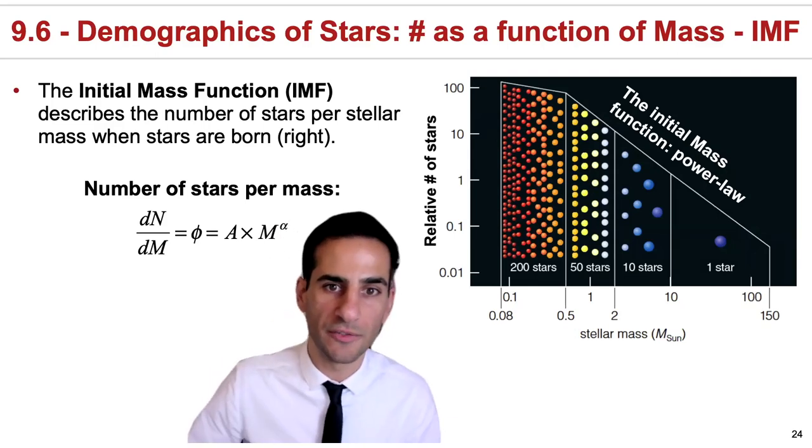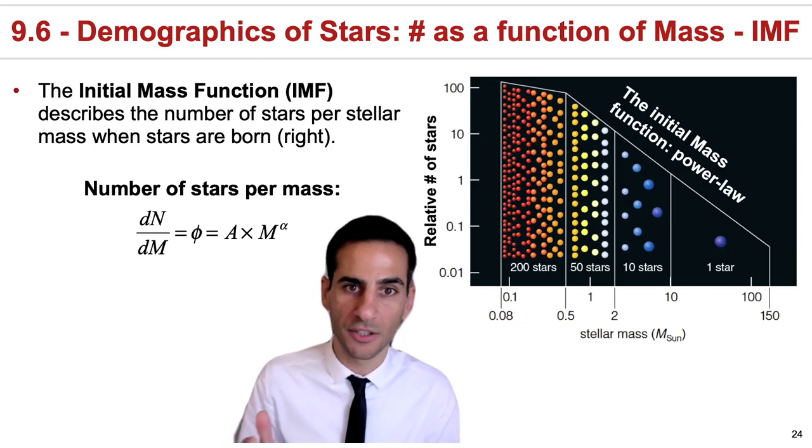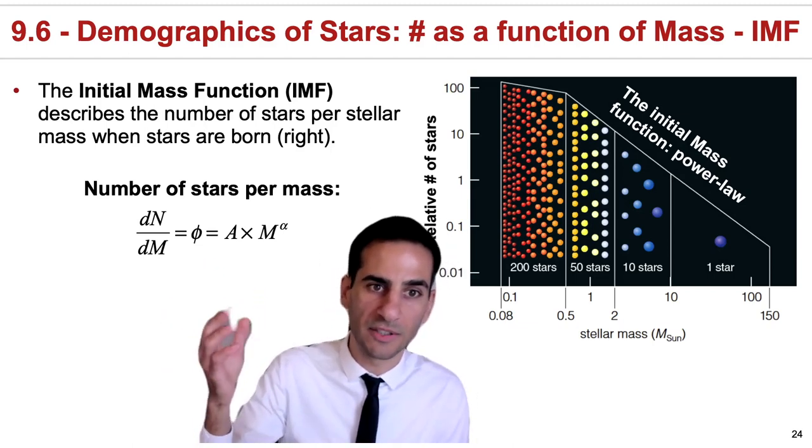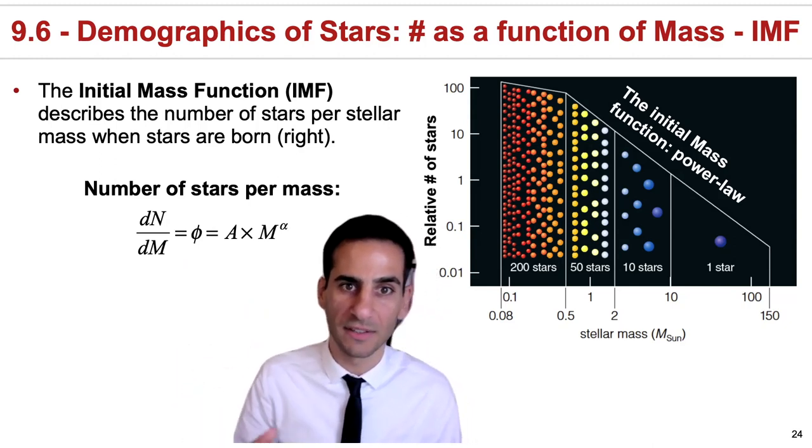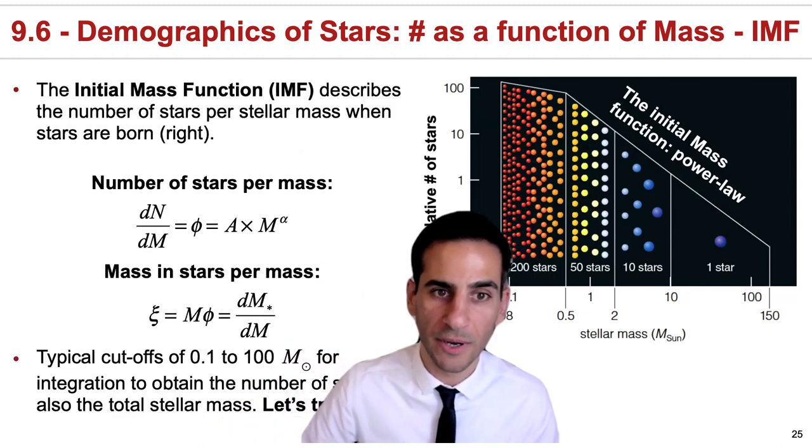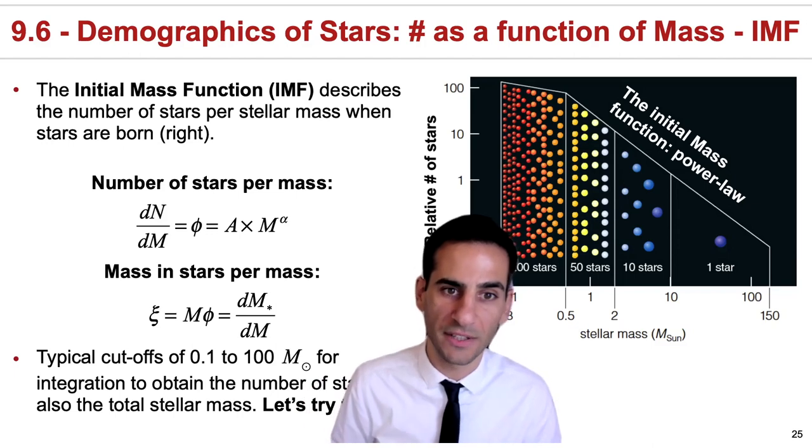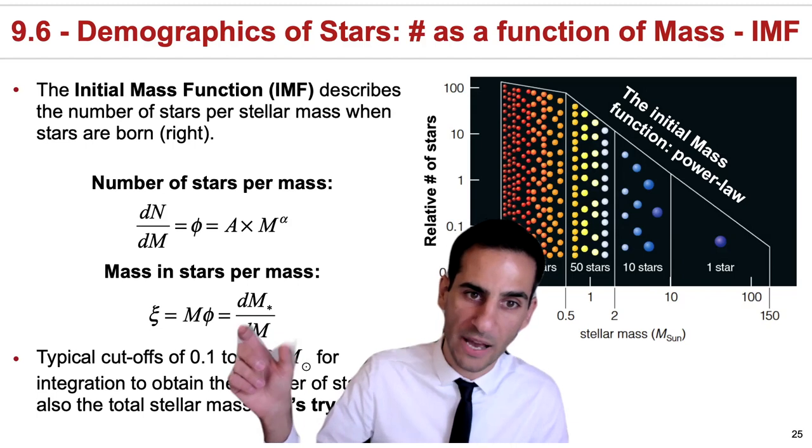We can now come back to what we covered at the beginning of this section, the initial mass function. This is a power law essentially telling you the relative number of stars that form as a function of mass at the moment of creation, and if you want to look at the mass in stars per mass, you can multiply by mass and then you have a relative mass per mass.